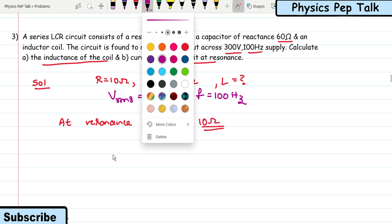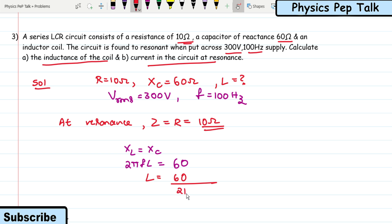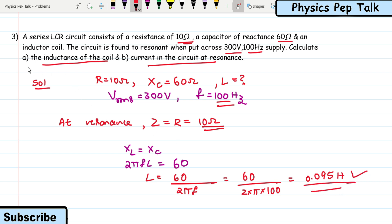Since X_L = 2πfL = X_C = 60 Ω, the value of L = 60 / (2π × 100) = 0.095 Henry. The unit of inductance is Henry. This is the required solution for part (a).